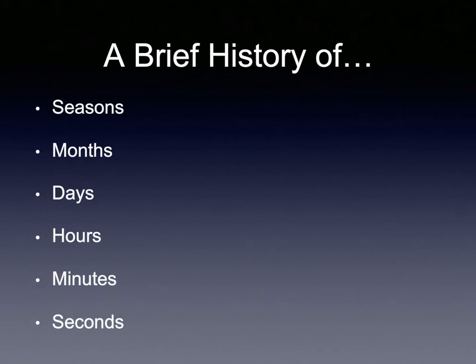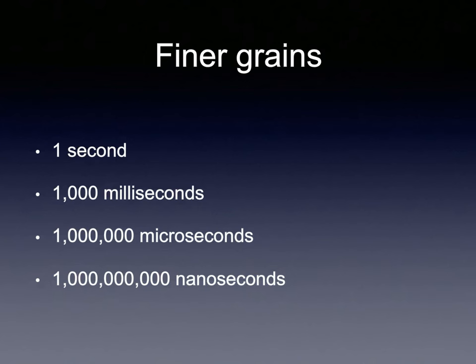The history of time shows a finer and finer grain of time that we care about. At one point all we cared about were seasons, then months, days, hours, minutes, seconds, and time zones — which showed up in the 19th century when we could finally travel fast enough that it mattered. As computer scientists and software engineers, we care about seconds, milliseconds, microseconds, and nanoseconds.